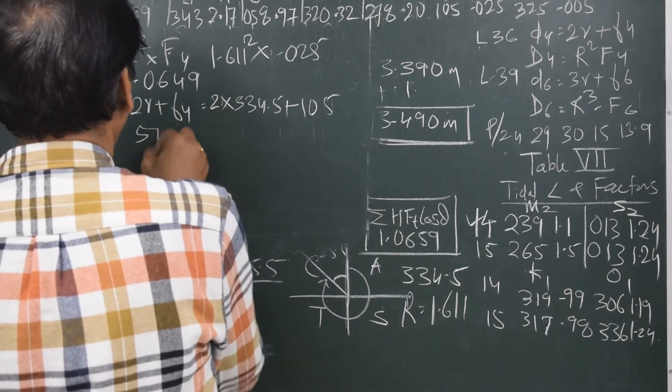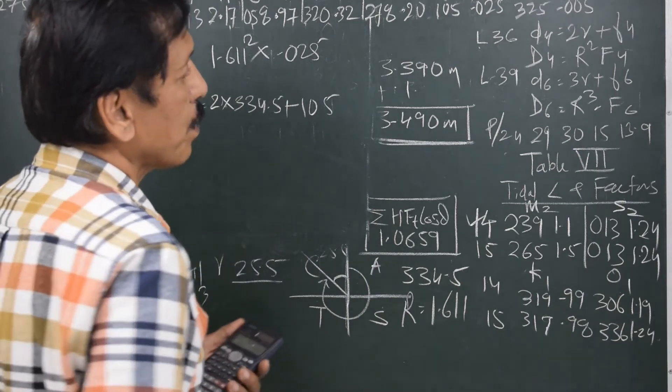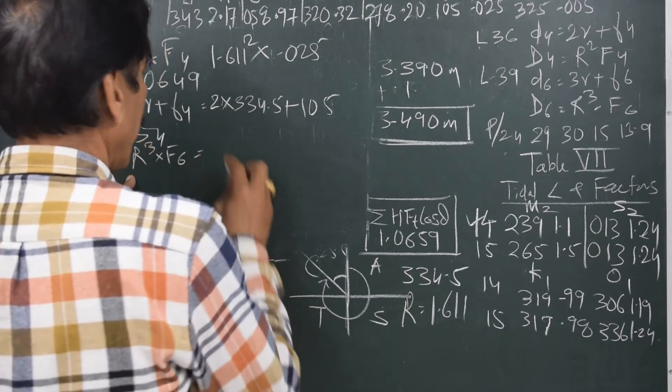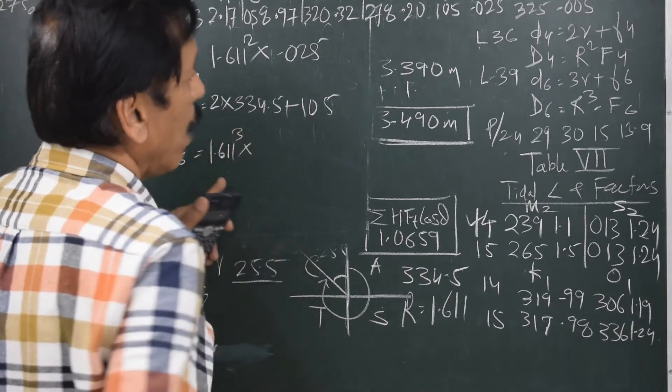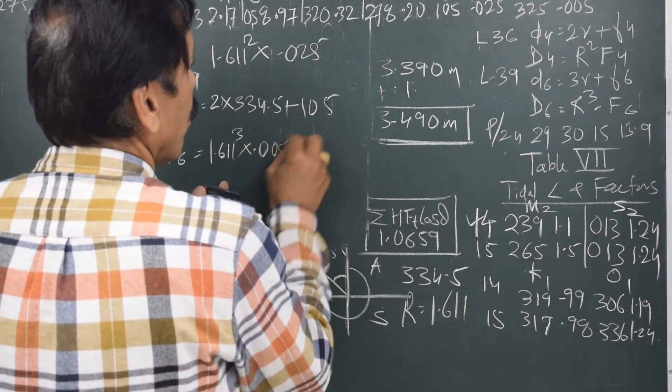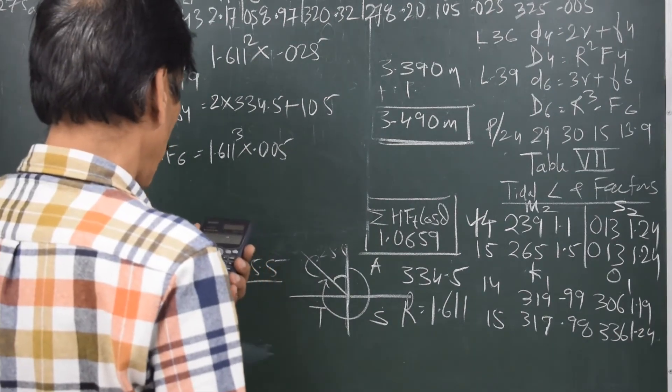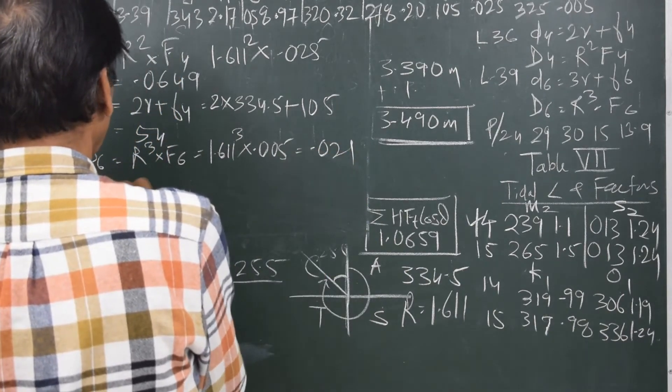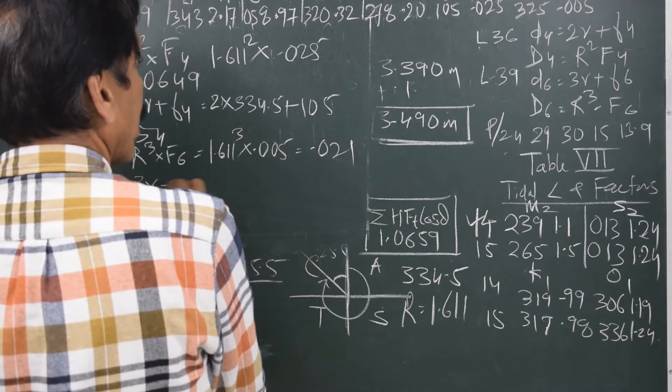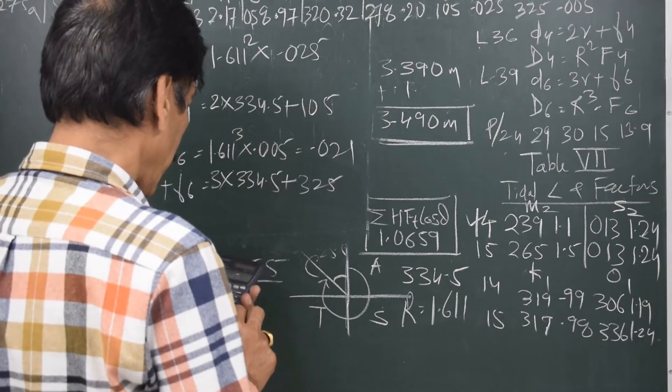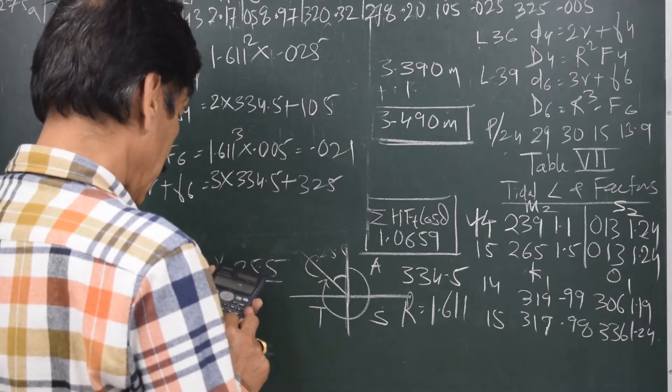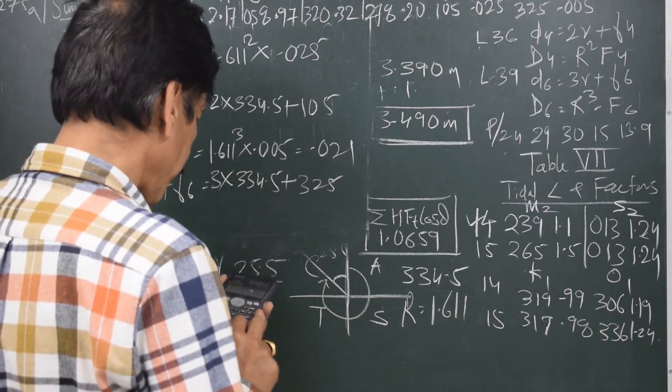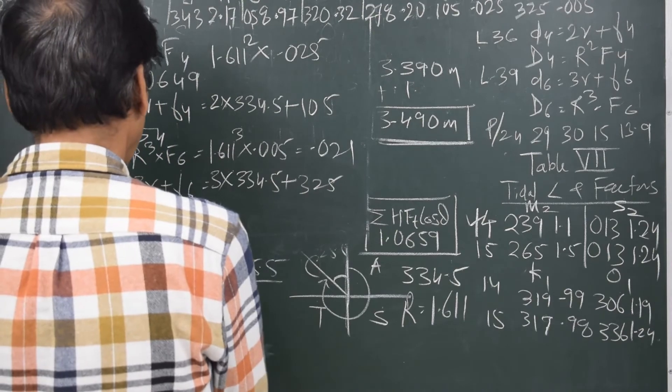Let us find capital D6 now. The formula here is R cube times F6: capital R cube is 1.611 cubed and F6 is 0.005, that gives me 0.021. And then small d6 is 3R plus F6, which is 1320.5. Let me minus 720, I get 608. Let me minus 360 again, I get 248.5.